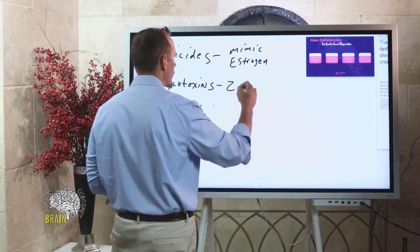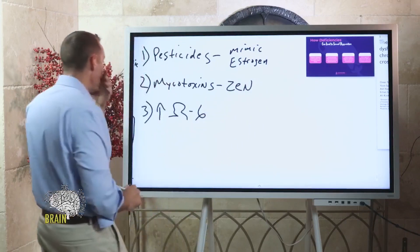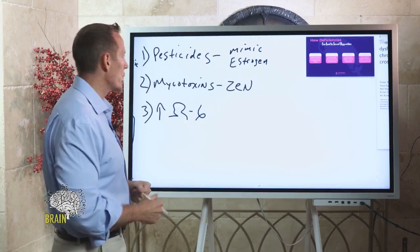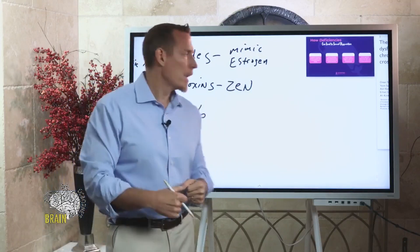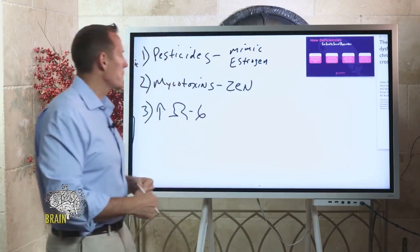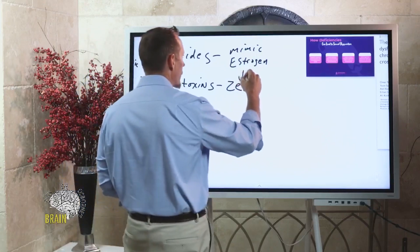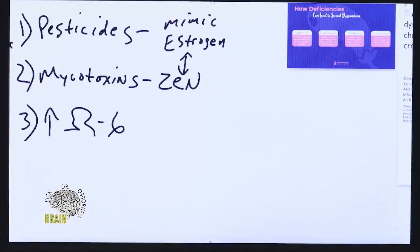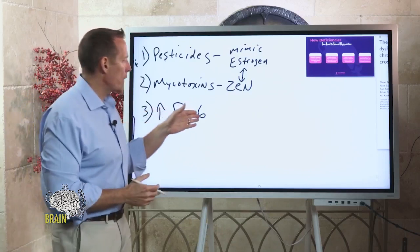There's a mycotoxin called zearalenone — often abbreviated as ZEN — produced by a type of mold called Fusarium. This particular mycotoxin is also an estrogen mimicker, and it has been shown to create problems in both men and women in terms of sexual function.